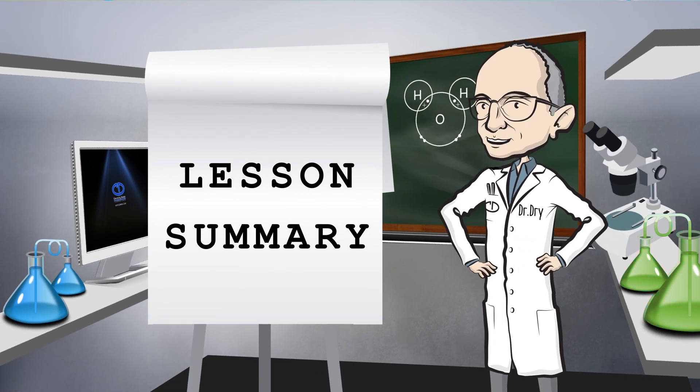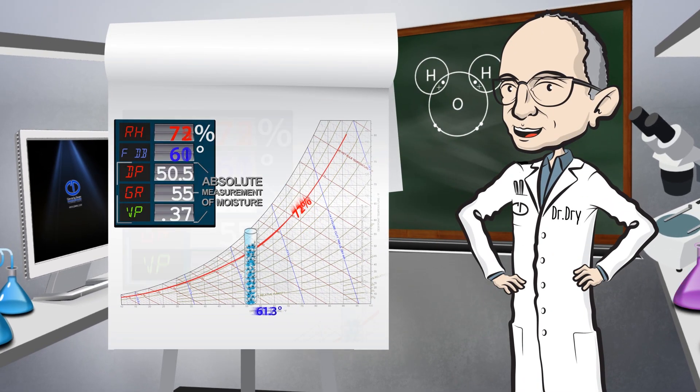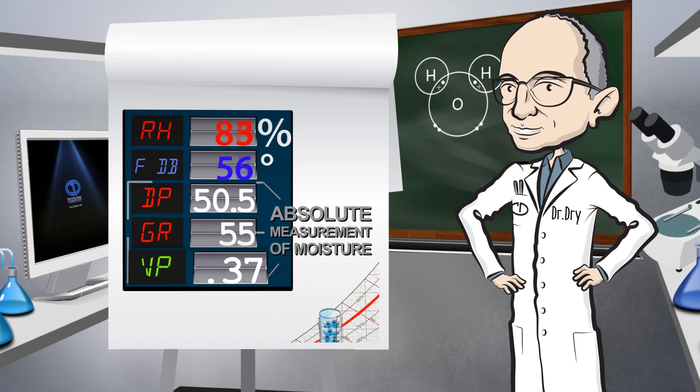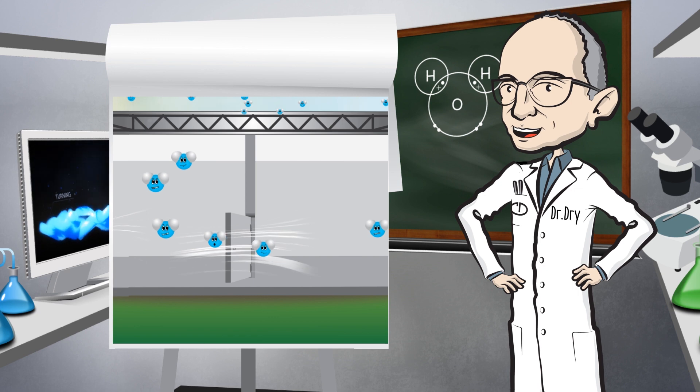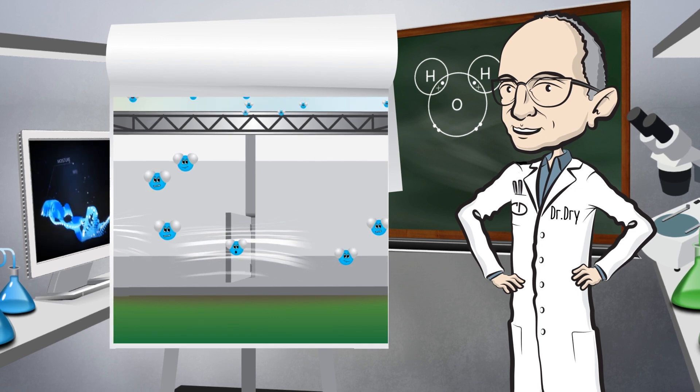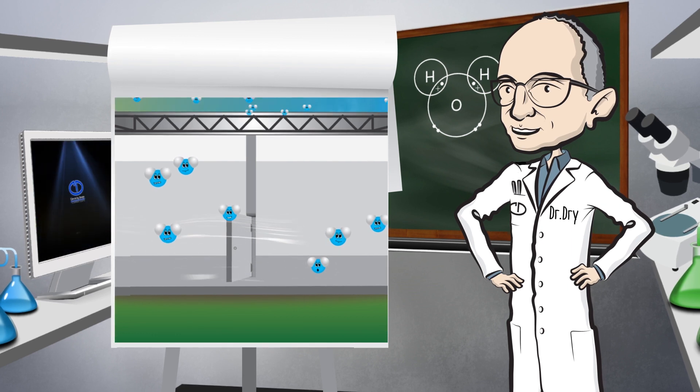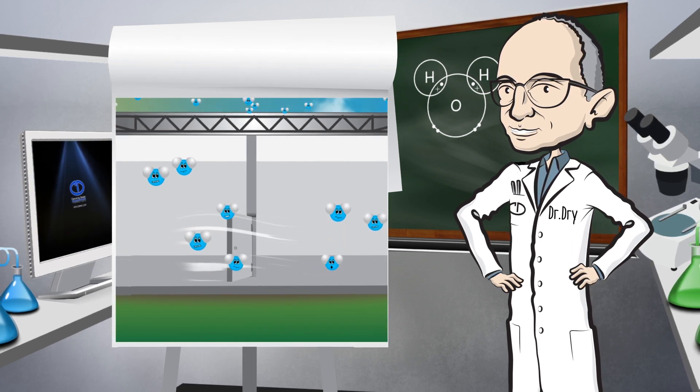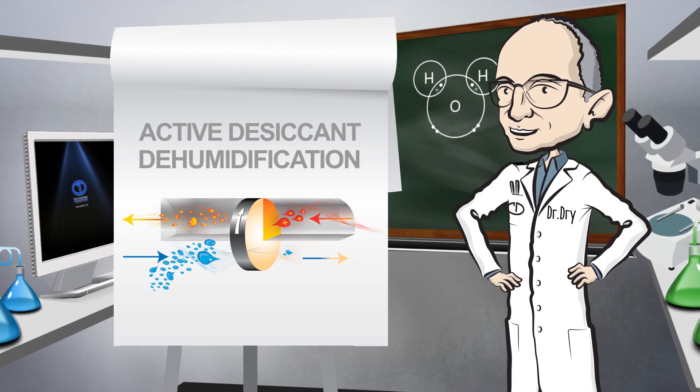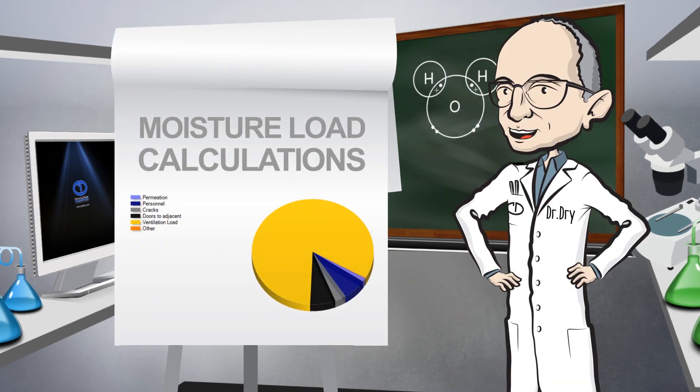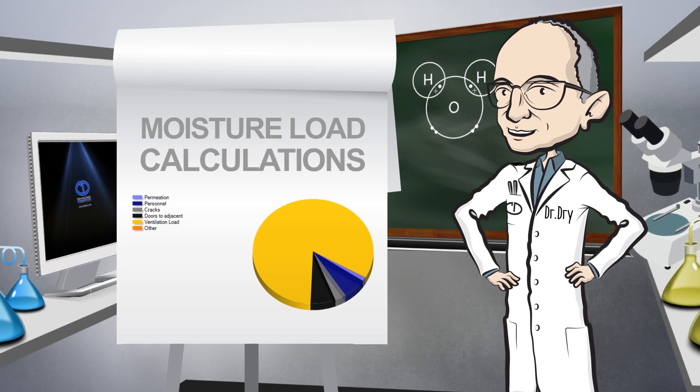For those of you still watching, let's summarize. Vapor pressure. It is the partial pressure, that part of the pressure of just the moisture vapor in air. Pressure always goes from high to low. So, vapor pressure differences in outdoor air, conditioned spaces, and dry spaces are considerable, and need to be understood. It's also very important to understand vapor pressure to explain how desiccants work, as well as determining moisture loads. Both coming soon on a webinar near you.